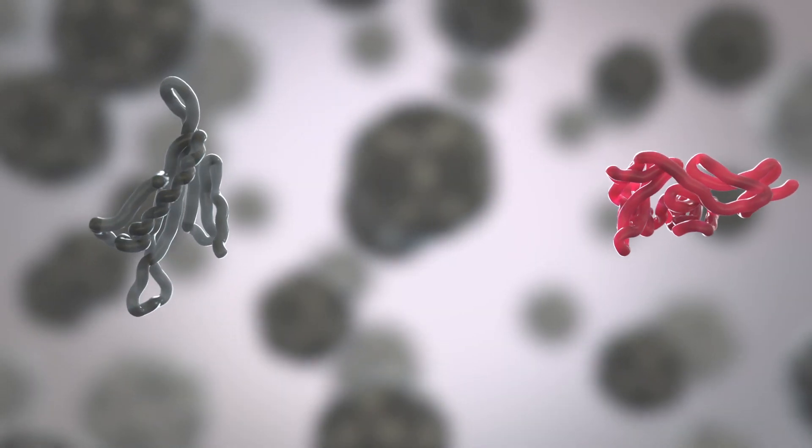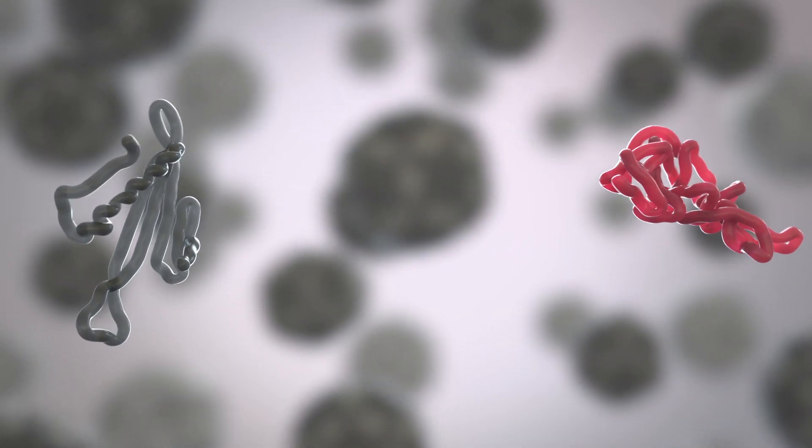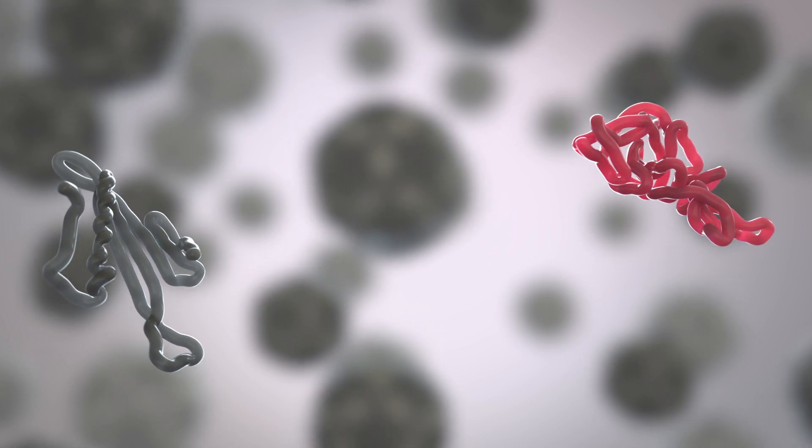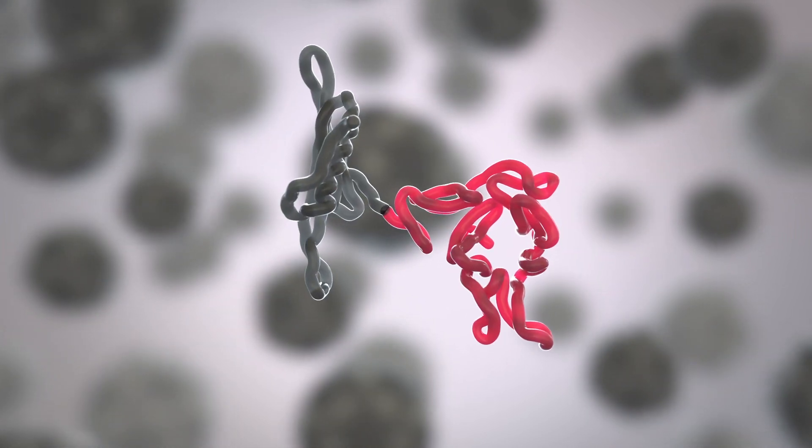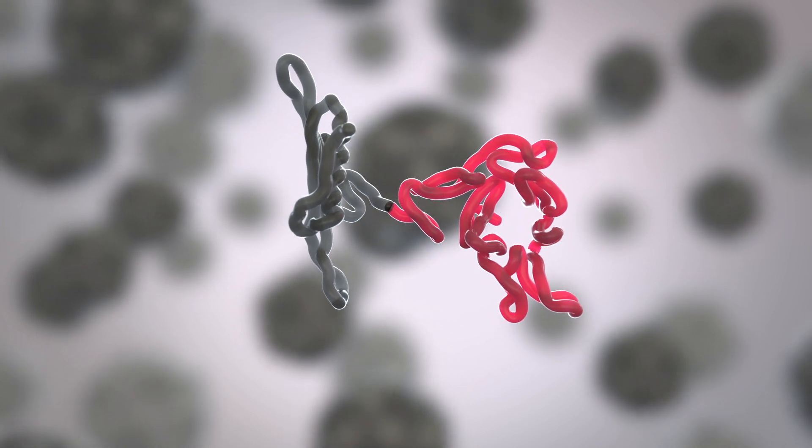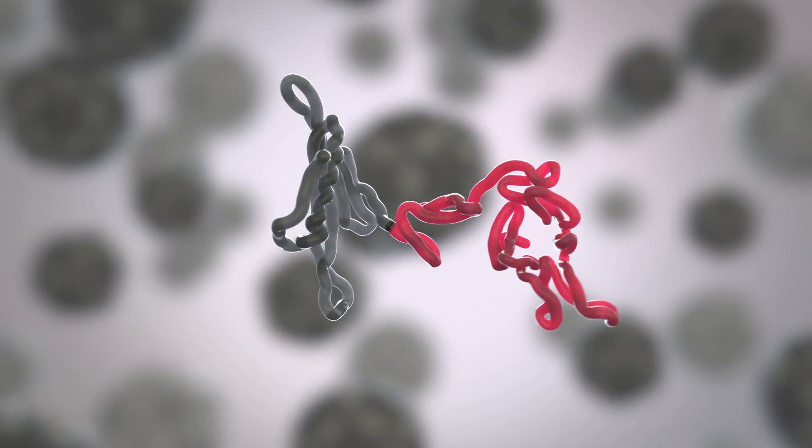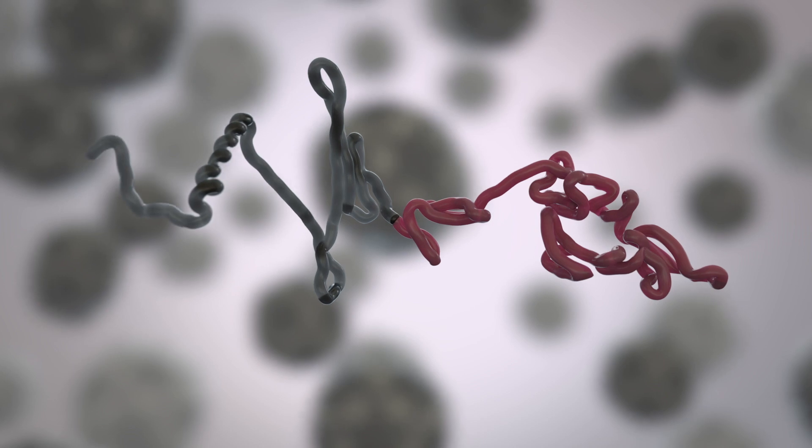But unfortunately, the two main ways of attaching antigens to virus-like particles have major flaws. Directly fusing the antigen to the coat proteins can easily damage the shape of either the antigen or the coat protein, making the vaccine ineffective.